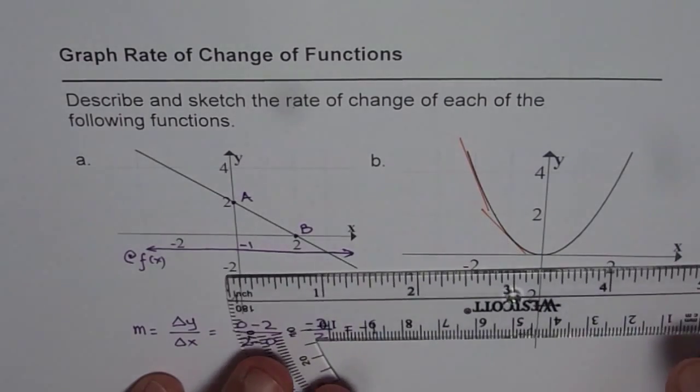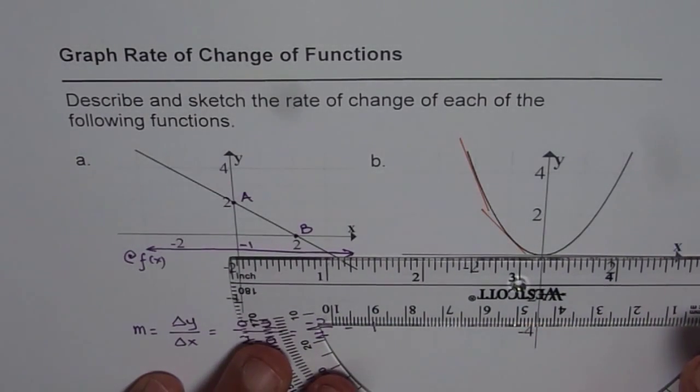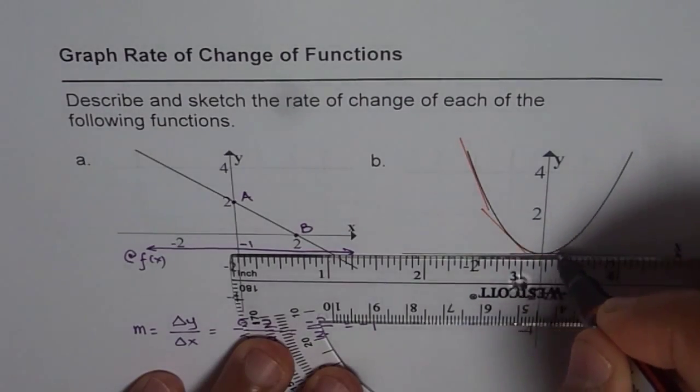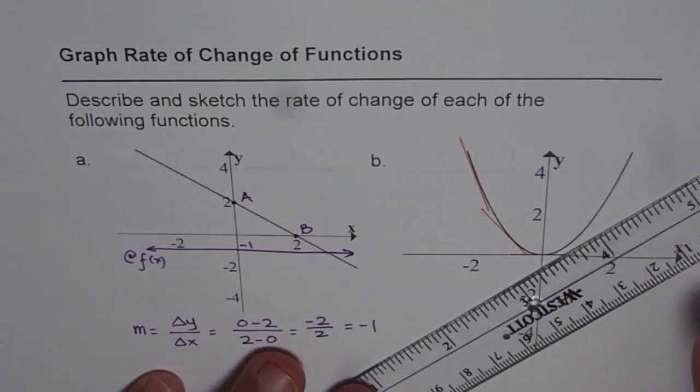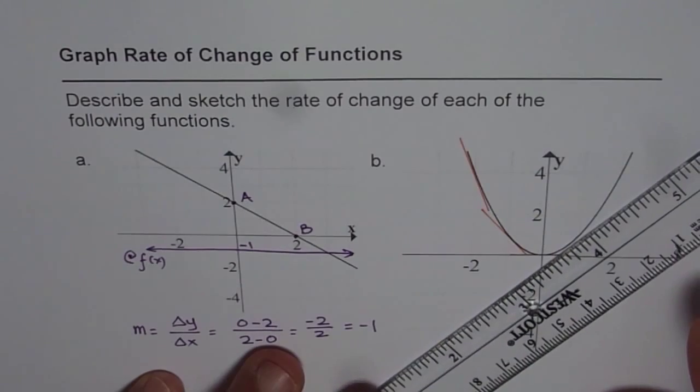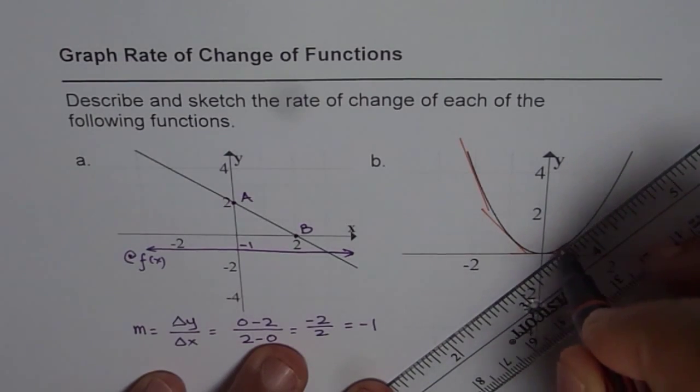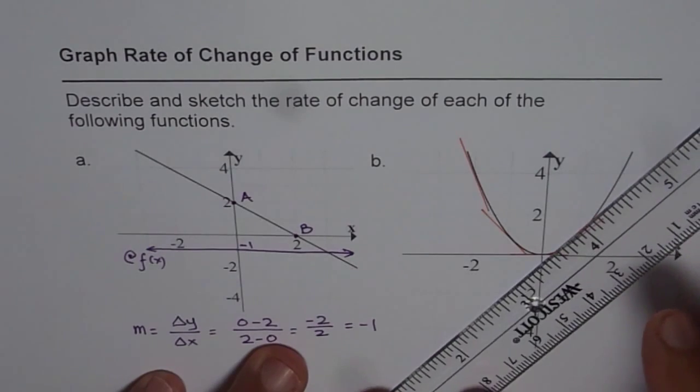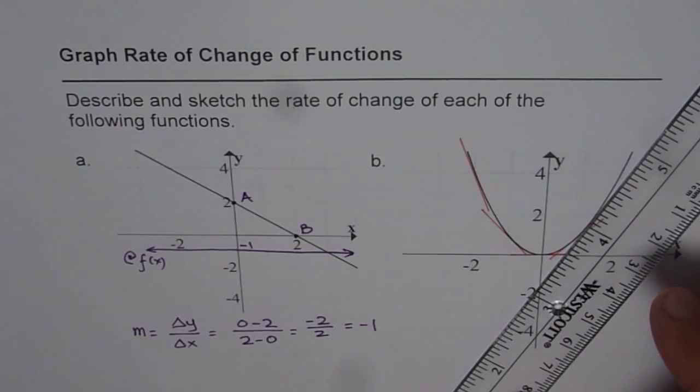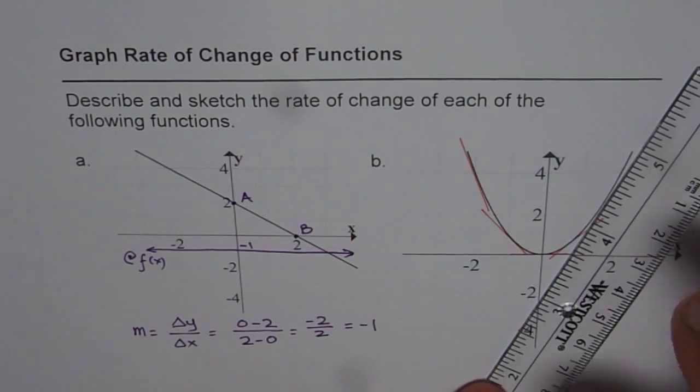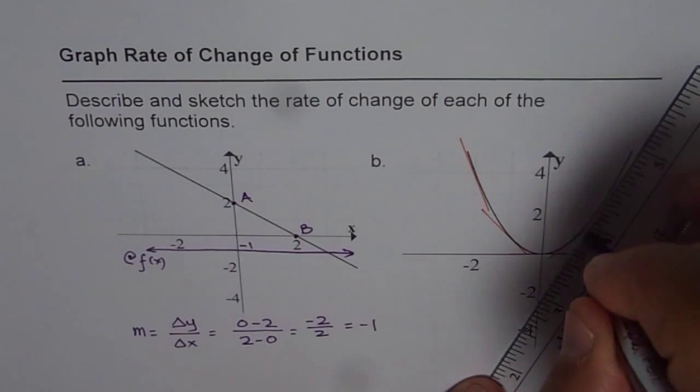At zero, if I draw a tangent, it will match with the horizontal x-axis. If I move towards the right, then the tangent will be positive. Let me take one point and just draw a tangent. Further, if you move away, then it will be more positive. That means the slope is increasing as you move from left to right. That is what we observe here.